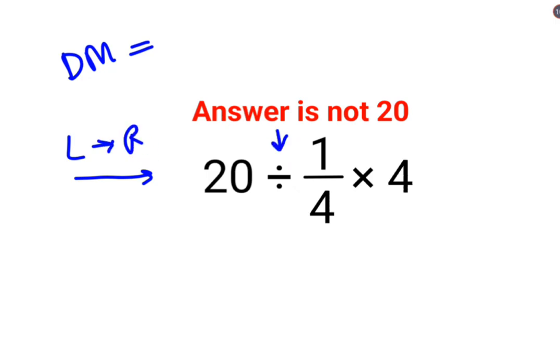Whatever operation happens first on your left hand side has to be done first. So first we will do 20 divided by 1 by 4. Now since there is a fraction involved,